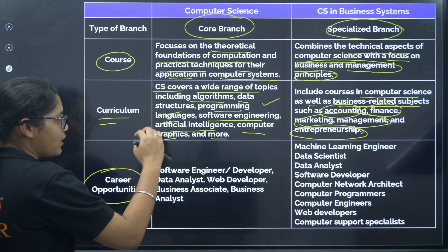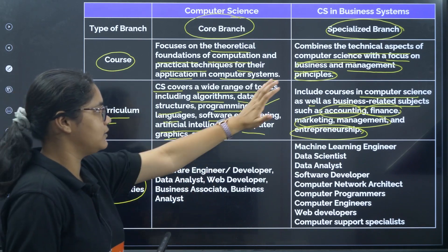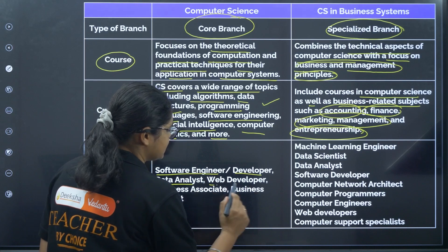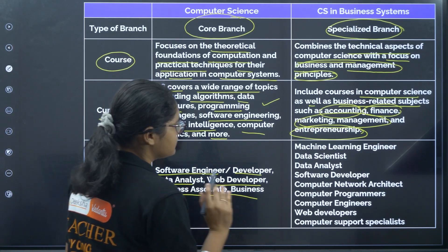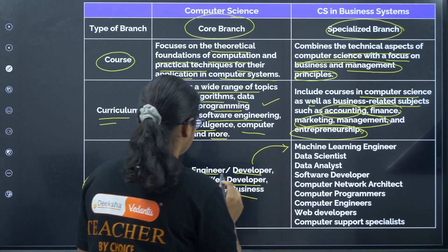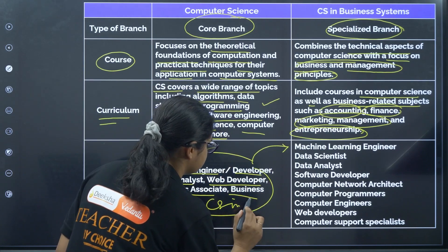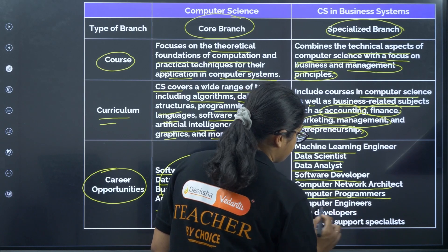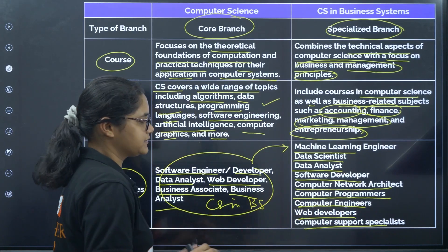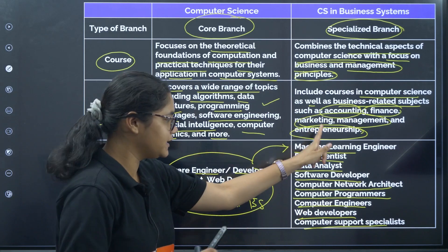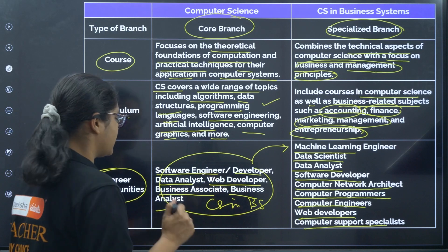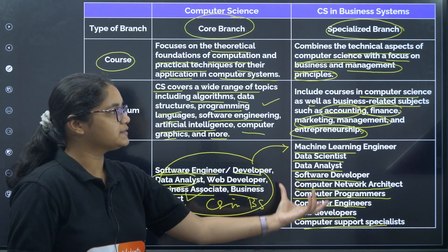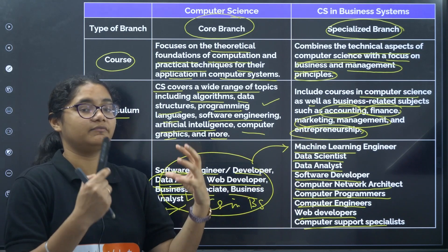Regarding career opportunities, in computer science you can become a machine learning engineer, data scientist, data analyst, software developer, computer network architect, computer programmer, computer engineer, web developer, or computer support specialist. In computer science and business system, those same roads are open, plus additional roles like business associate and business analyst. So the scope is more in computer science in business system because you are specialized.